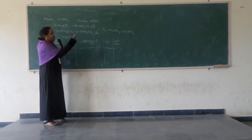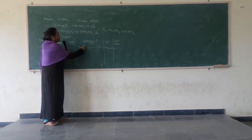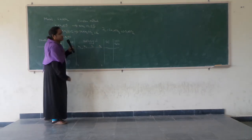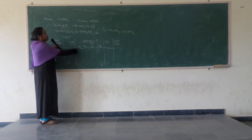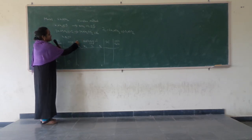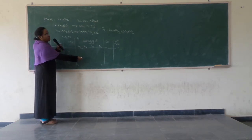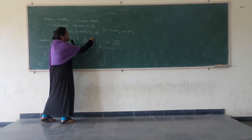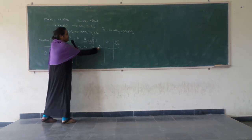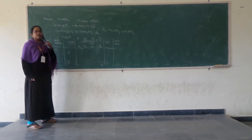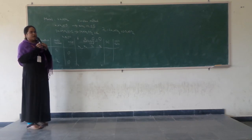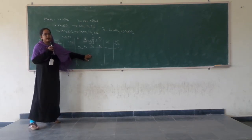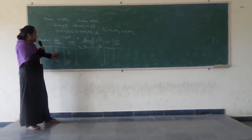Next, for the coefficients of the objective function column, we consider all variables: x1, x2, s1, s2. The coefficient of x1 in the objective function is 6, x2 is 5, s1 is 0, and s2 is 0.